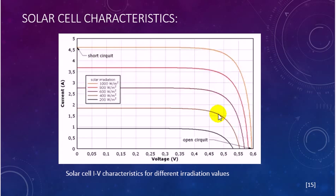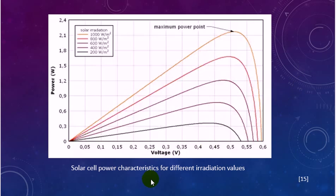This picture presents solar cell power characteristics for different irradiation values. When the irradiation increases, the current and the power increase in the cell.